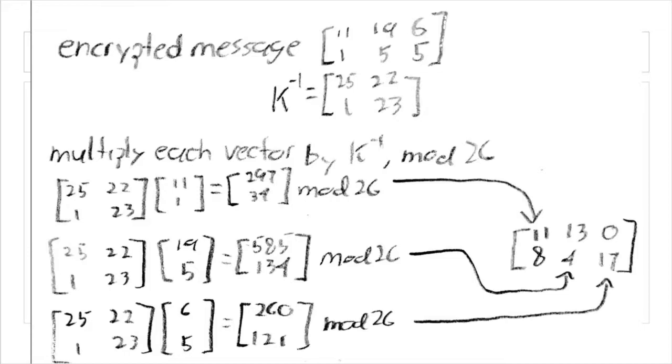Now that we have k inverse, all we have to do is the exact same thing we did to get our original encrypted message. We take each vector of our encrypted matrix, 11, 1, 19, 5, and 6, 5, and we multiply them individually by k inverse.